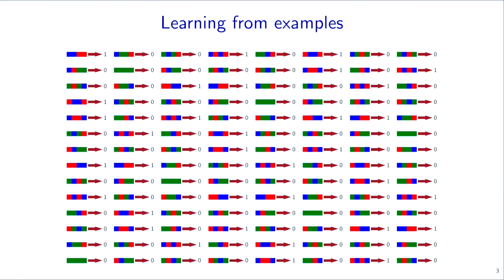So let's focus now on machine learning. This is a cartoon idea of how machine learning works today. You gather a lot of examples demonstrating a particular behavior your system should have. In this simple example we have colored bars and each bar is labeled either 1 or 0. Can you figure out what the classifier is? Take about 10 seconds to look.